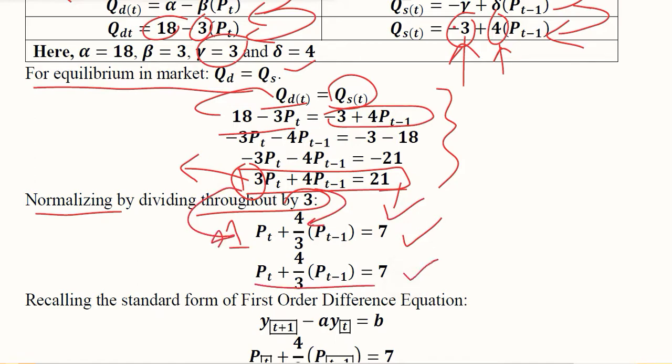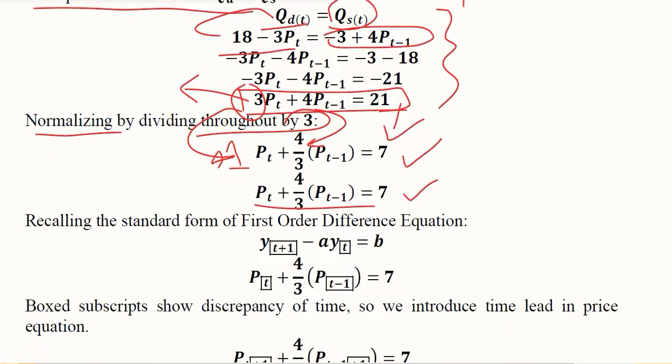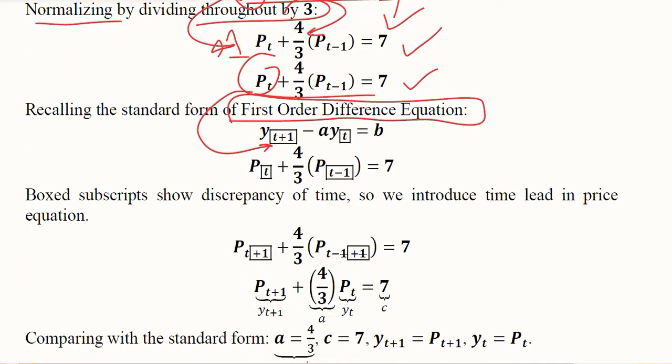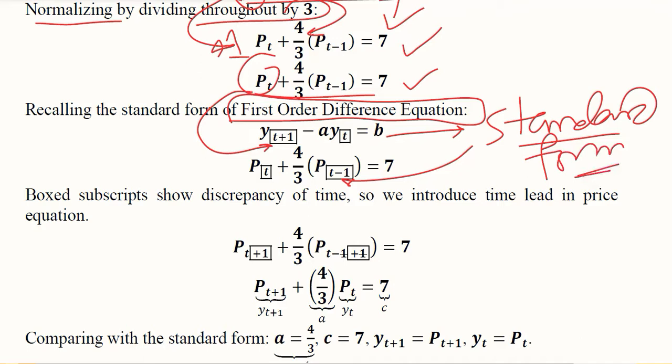Now this is still not in an ideal form because the subscript is still t; it has to be t plus 1 in order to be called a first order difference equation. So we introduce, in this subscript which is not in accordance to the standard form, in order to make it adjacent to the standard form...